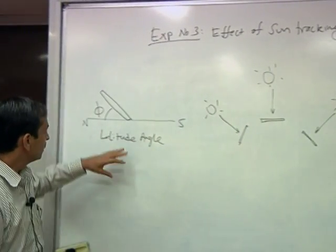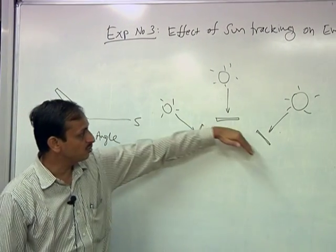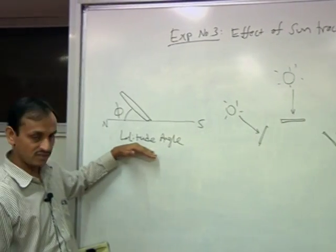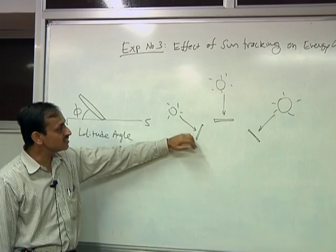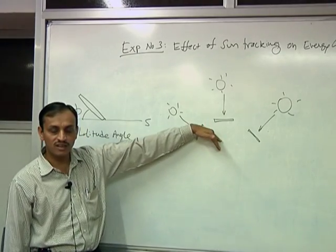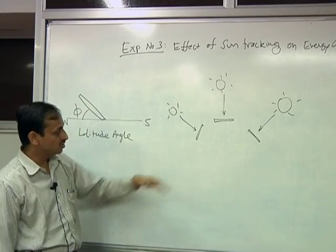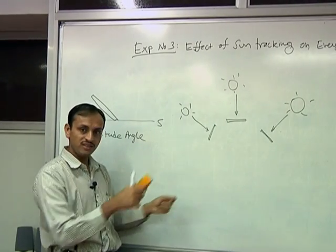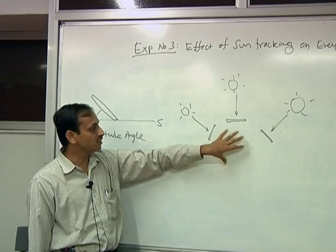In this experiment, what we need to find out is what will happen if you keep your module at a fixed angle versus continuously changing the module position to follow the sun. Sun tracking will generate more energy, but it requires extra arrangement because your module has to be changing position all the time. In your laboratory kit, an arrangement is provided so you can change both the tilt angle and the orientation — in the east-west as well as the north-south direction.